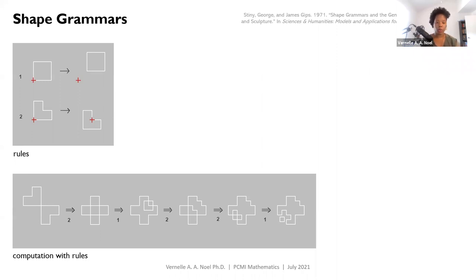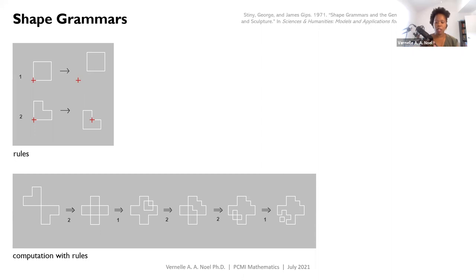Shape grammars can be used to analyze design, describe design, and create design. What I will share with you today is how I'm using an approach to the mathematics of shapes to document a particular craft practice — wirebending. Shape grammars consist of rules and steps: rules that describe operations with left-hand and right-hand sides, and computations documenting one's steps.